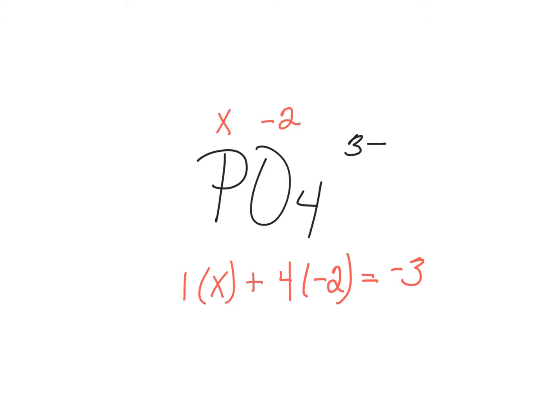We can solve this: X minus 8 equals minus 3, so X equals plus 5. The oxidation number of phosphorus in the phosphate ion is plus 5, and the oxidation number of oxygen is minus 2.